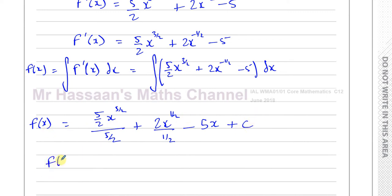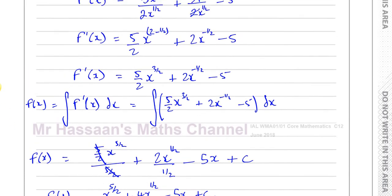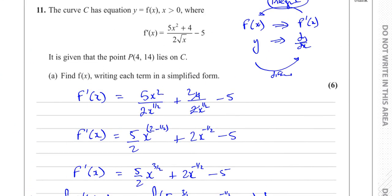Simplifying: 5 over 2 cancels with 5 over 2, leaving x to the power of 5 over 2. Dividing 2 by a half is like multiplying by 2, giving 4, so you have 4x to the power of a half. So f of x equals x to the power of 5 over 2 plus 4x to the power of a half, minus 5x, plus c. This is the general solution.